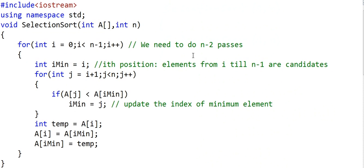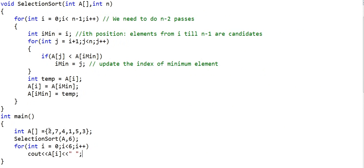I will quickly run this logic in a real C++ program. I have written this function selection sort. In the main method, I have created an array of six elements. This is the same array that we had picked up as example. And then I am calling the selection sort function, passing the array and the number of elements. And once I have sorted the array, I am printing the elements.